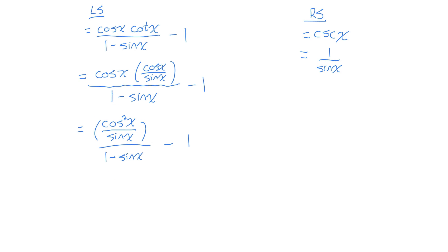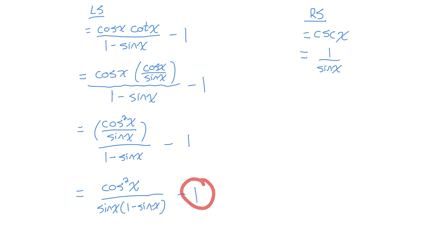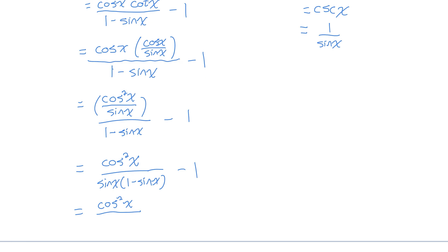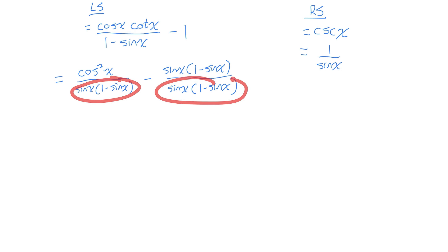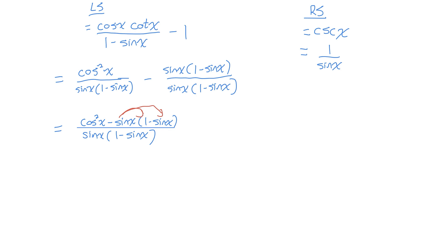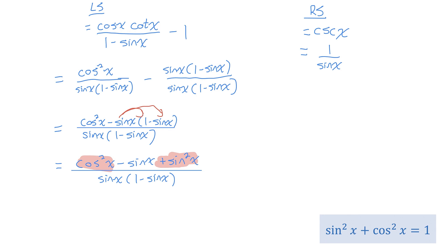I can rewrite that expression by multiplying sine x by 1 minus sine x in the denominator. I want to subtract 1, so I'll rewrite that one with a common denominator of sine x times 1 minus sine x. Now that I have a common denominator, I can rewrite it as a single fraction. I'll expand the numerator by distributing the negative sine x to both terms in brackets, giving me cosine squared x minus sine x plus sine squared x. In the numerator I've got cosine squared x plus sine squared x — that's the Pythagorean identity equal to one. So I replace cos squared plus sine squared with one.